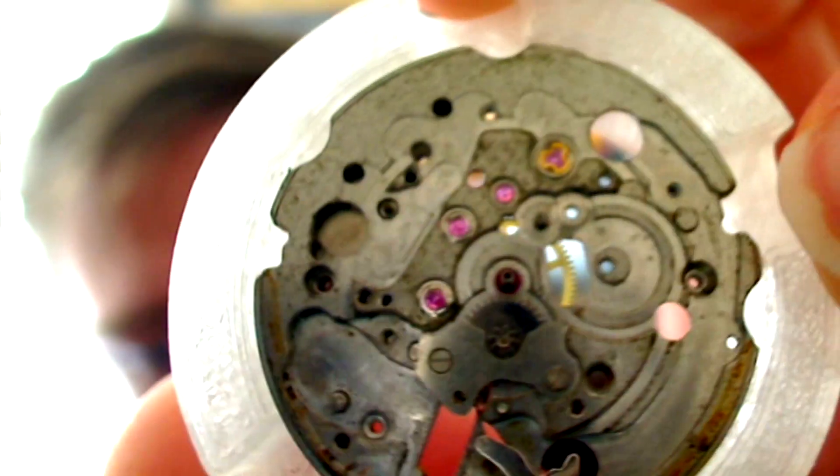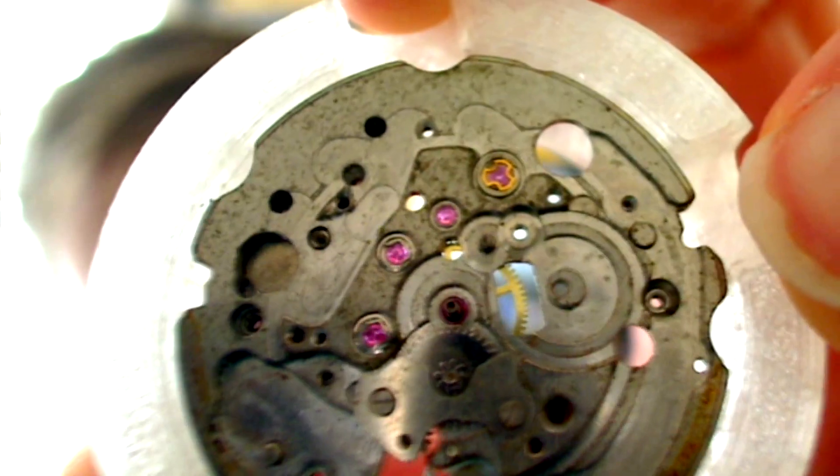You're looking at the shock settings with the little lyre-shaped spring. The purpose of those in the train of this movement is to give some shock protection and, in theory, better accuracy to the movement. Because rather than the wheels, when you have a shock, just sort of hitting a jewel or so on, they've actually got a spring on top, so it keeps the wheel pretty much in the same place rather than moving around. That's the theory anyway.